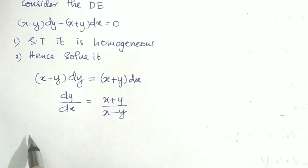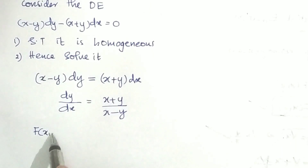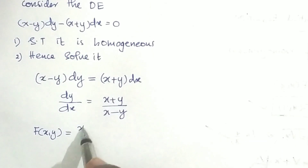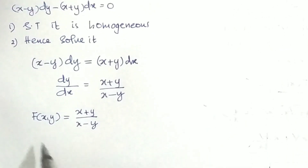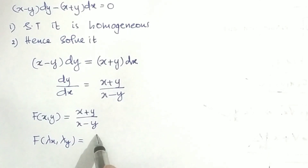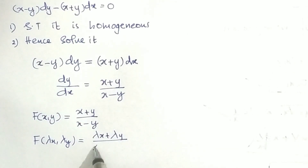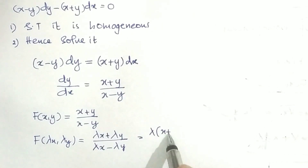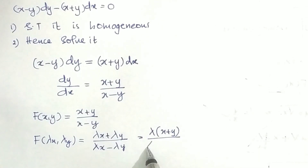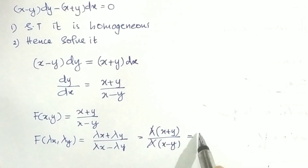To check if this is homogeneous, let f(x, y) = (x + y) / (x − y). Now substitute λx and λy: f(λx, λy) = (λx + λy) / (λx − λy). Taking λ outside in numerator and denominator, we get λ(x + y) / λ(x − y). Lambda cancels, giving f(x, y). Therefore it is homogeneous.